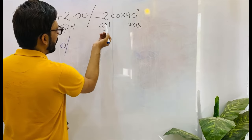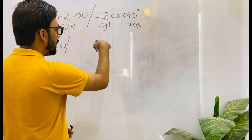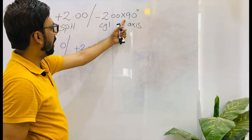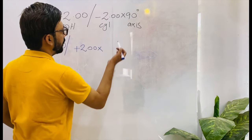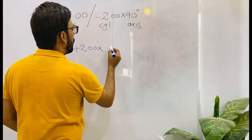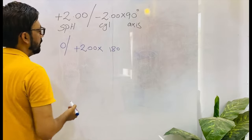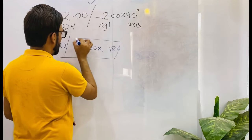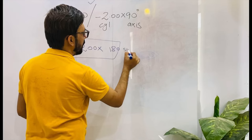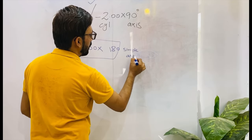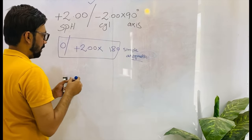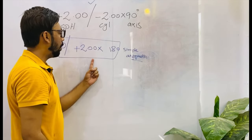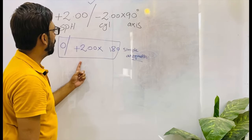The second step of transposition is we have to change the sign of the cylinder. The cylinder was minus two, and we will change it to plus two. The third step is we have to rotate the axis 90 degrees apart — the axis was 90 degrees and it will go to 180 degrees. So you can see this is not a mixed astigmatism. When we transposed it, it is now simple astigmatism — simple hyperopic astigmatism.